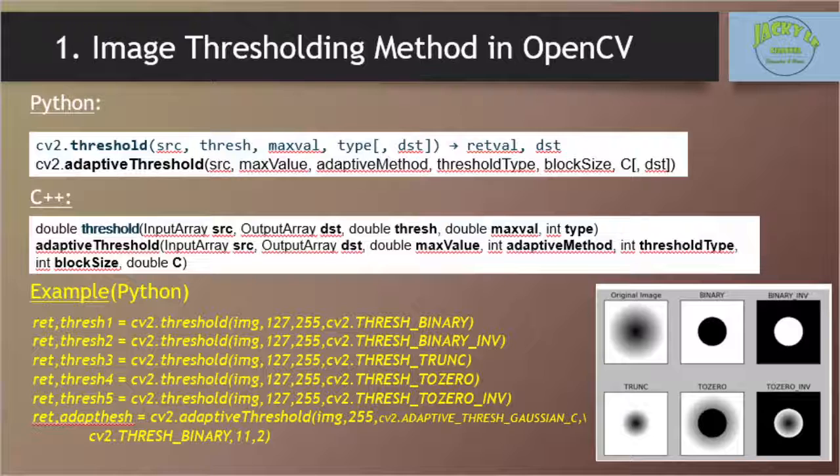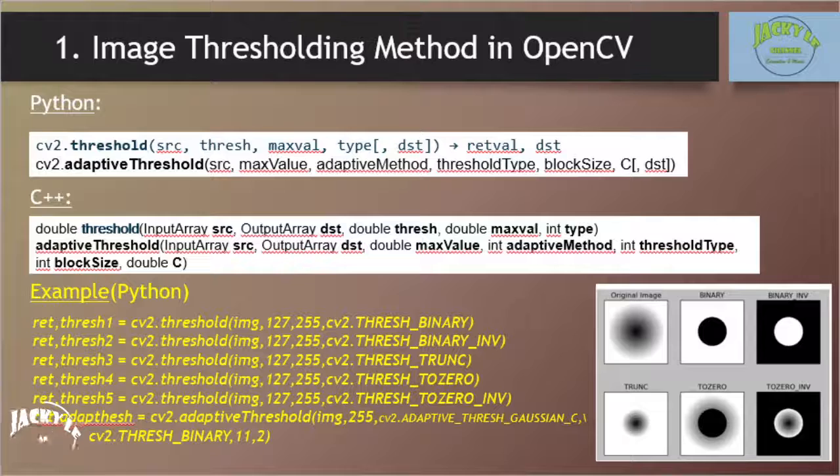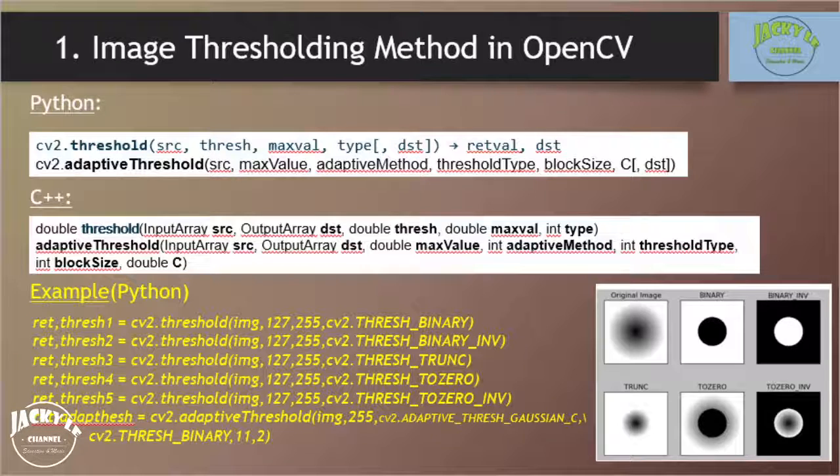As you can see in the method, the first argument is the source image, which should be a grayscale image. The second argument is the threshold value which is used to classify the pixel values. The third argument is the max val which represents the value to be given if pixel value is more than, sometimes less than, the threshold value.